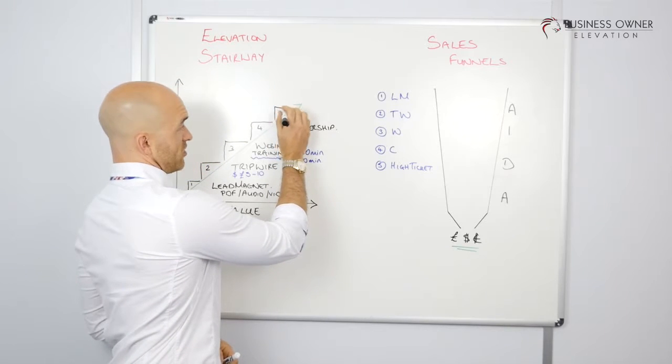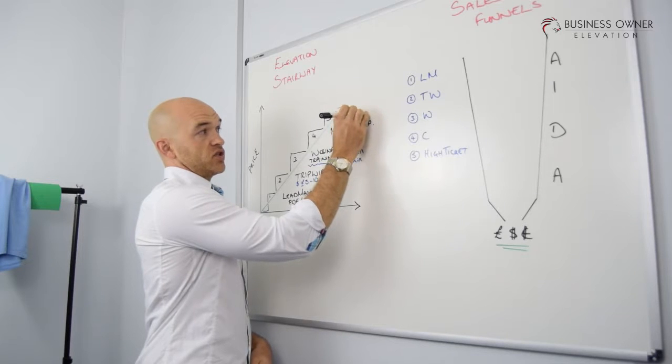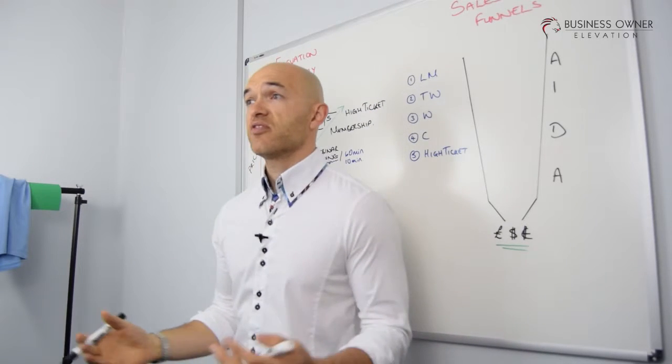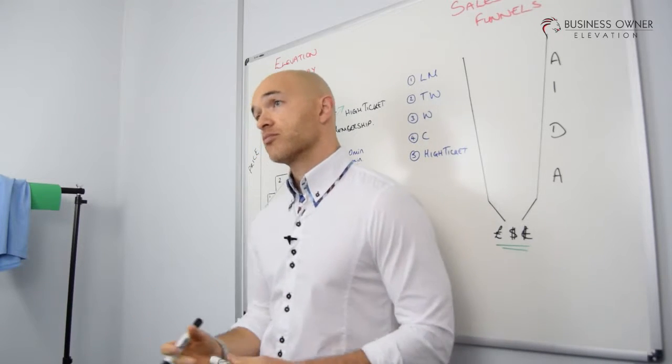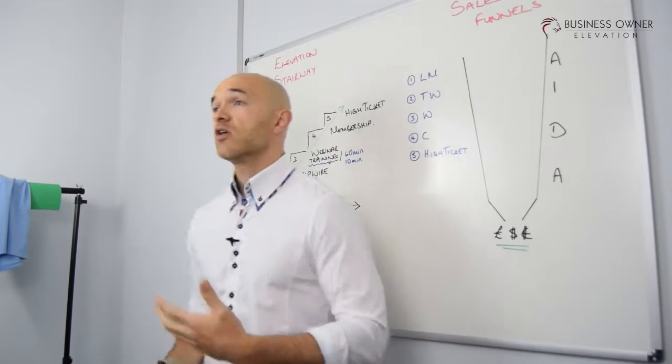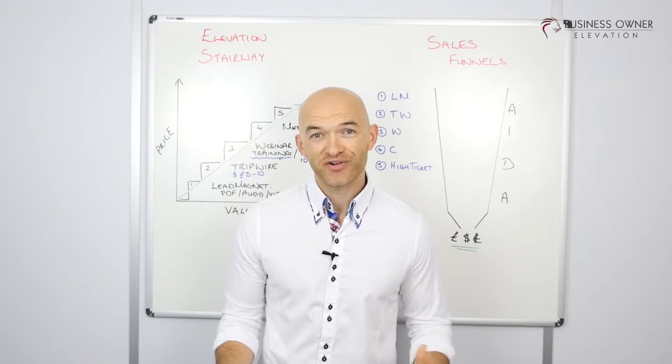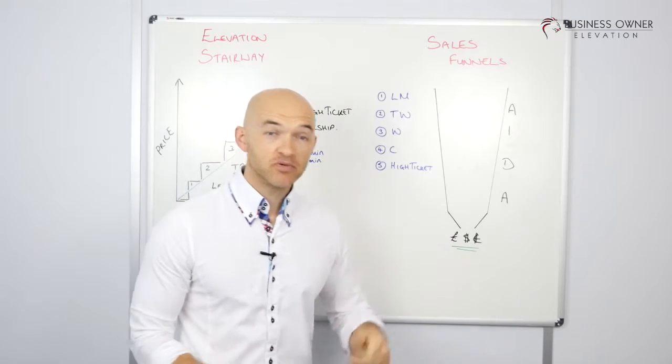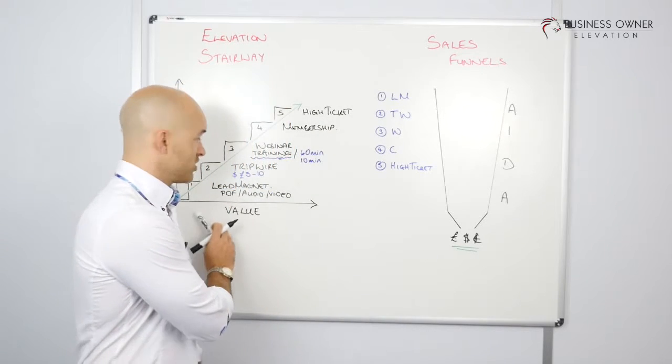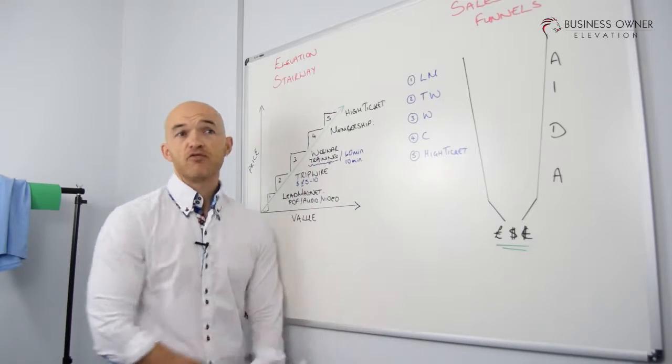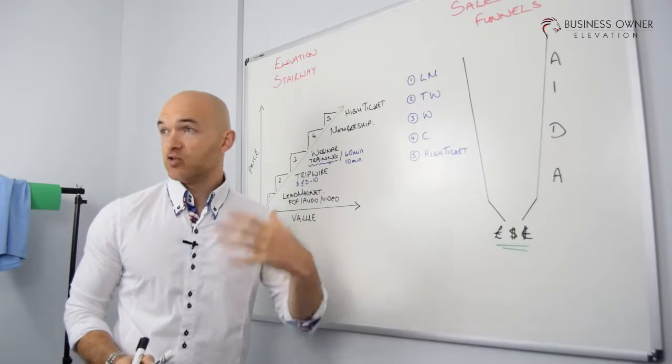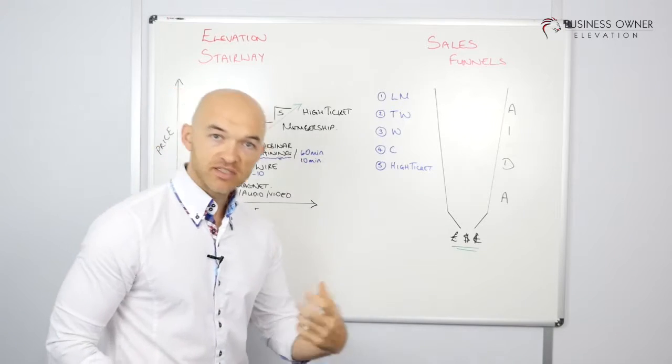The final one, number five, is high ticket. High ticket can be anything from $1,000 or more. Maybe you have a coaching program, could be group, could be one-to-one. Could be some kind of consultancy service. The thing with high ticket is that this is your centerpiece product that people can get from you. What we could have done is go from ground zero to step five without establishing any rapport, without establishing any way for people to future project what they can have.